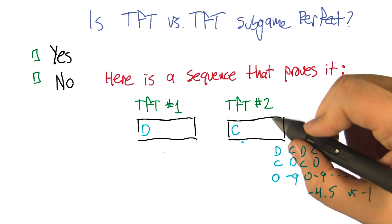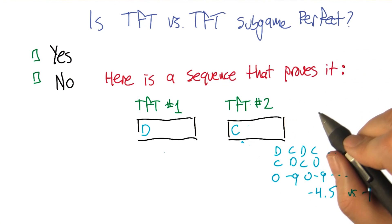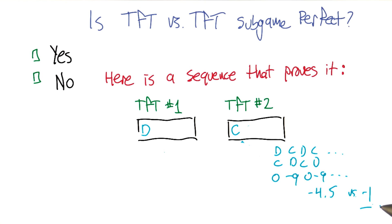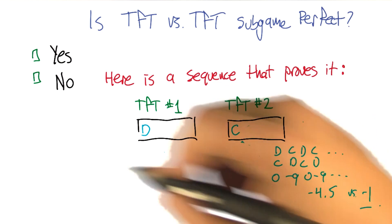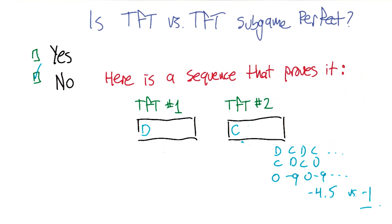So not being tit for tat at that point, but instead turning to always cooperate, would actually get it better. So the idea that it should defect at this point is an implausible threat. Exactly. So this is not subgame perfect. So yes, you nailed it. Yay. Does that make sense? It did make sense. Good.